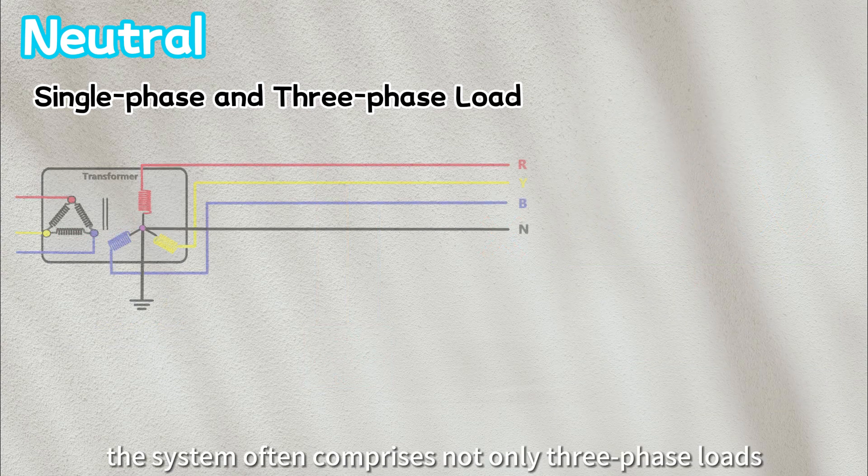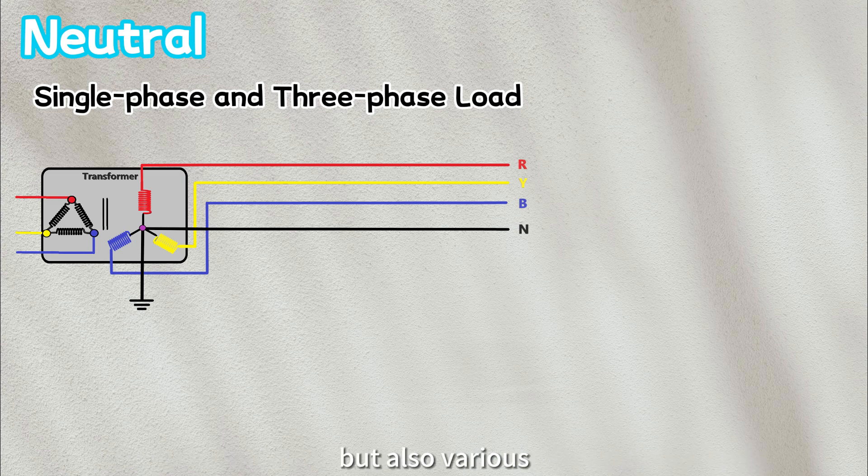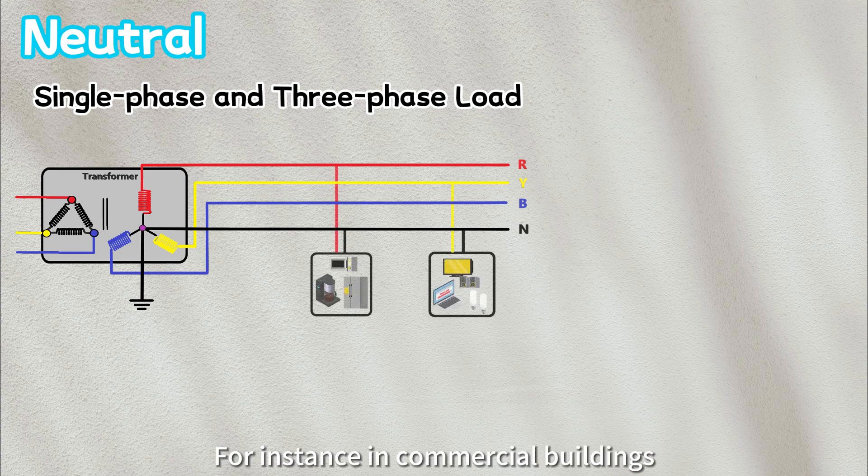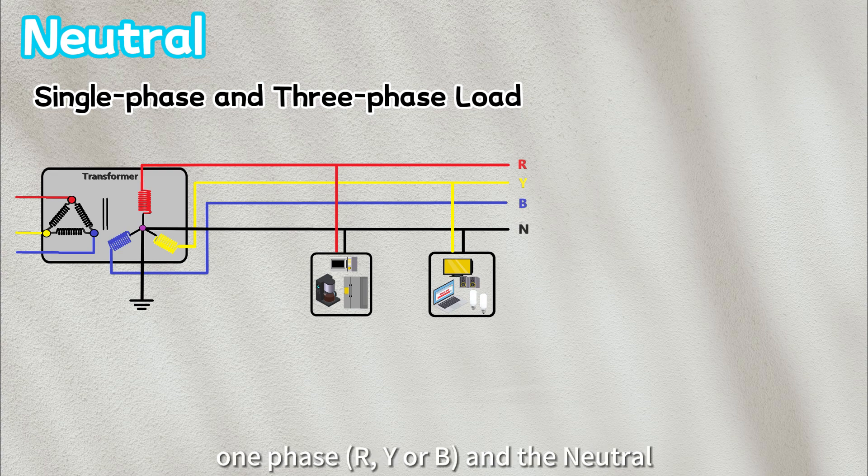In practical scenario, the system often comprises not only three-phase loads, but also various single-phase loads that require neutral as a return path. For instance, in commercial buildings, lighting and small appliances are commonly single-phase loads connected to one phase and the neutral,